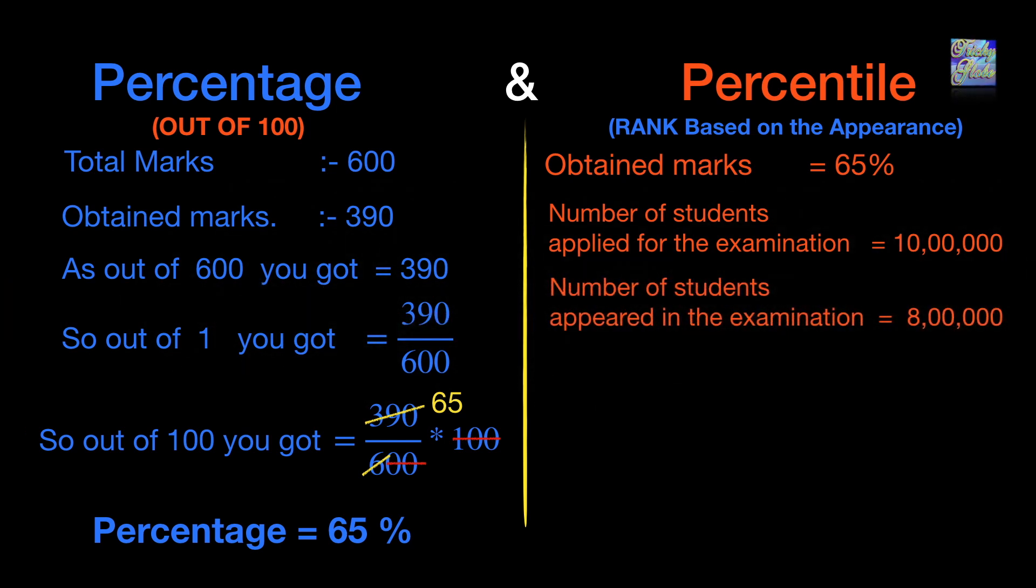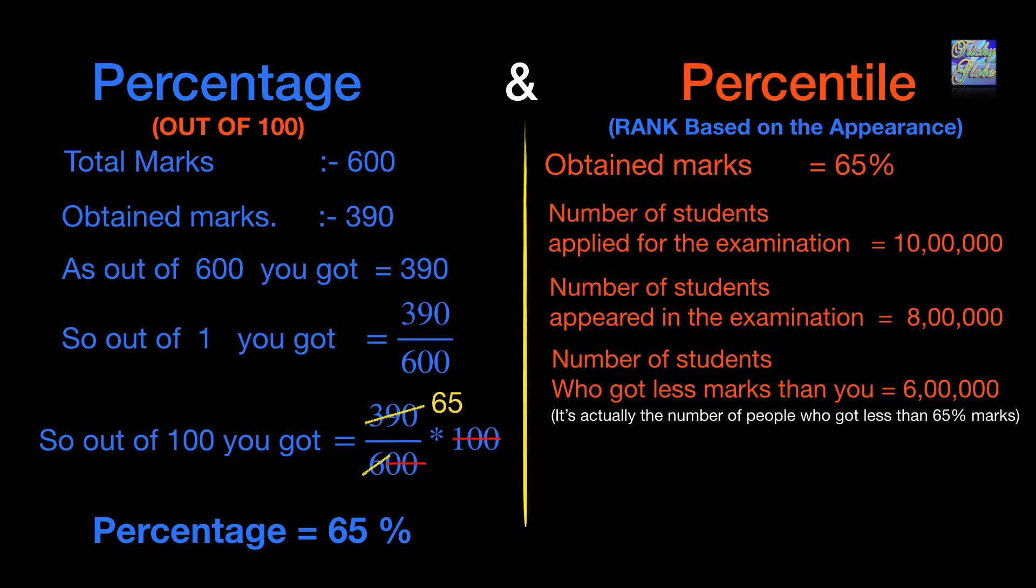This means 2 lakh students have not appeared. Now suppose out of these 10 lakh students, 8 lakh appeared, and there are 6 lakh people who got less than 65% marks. This means they got less marks than you because you got 65%. So basically, this is the number of people who got less marks than you.